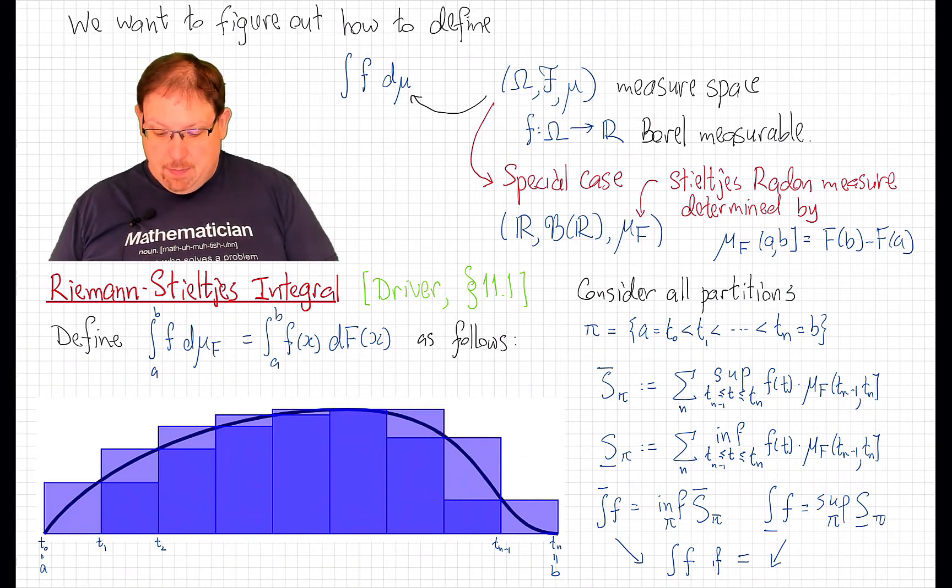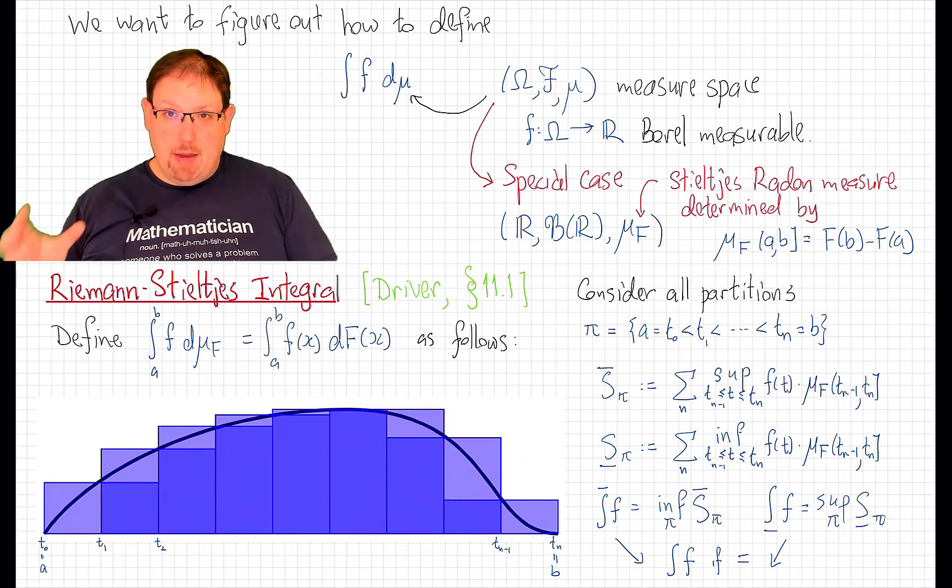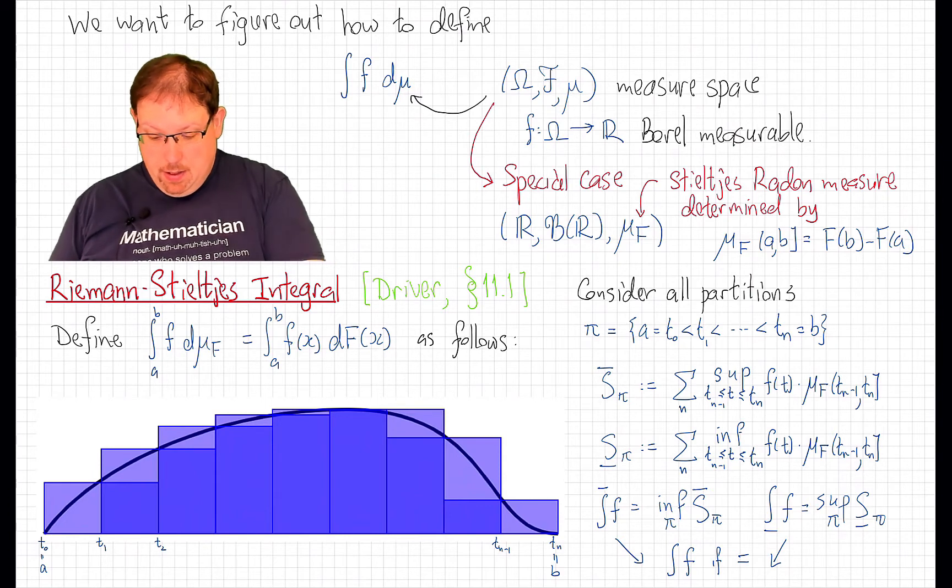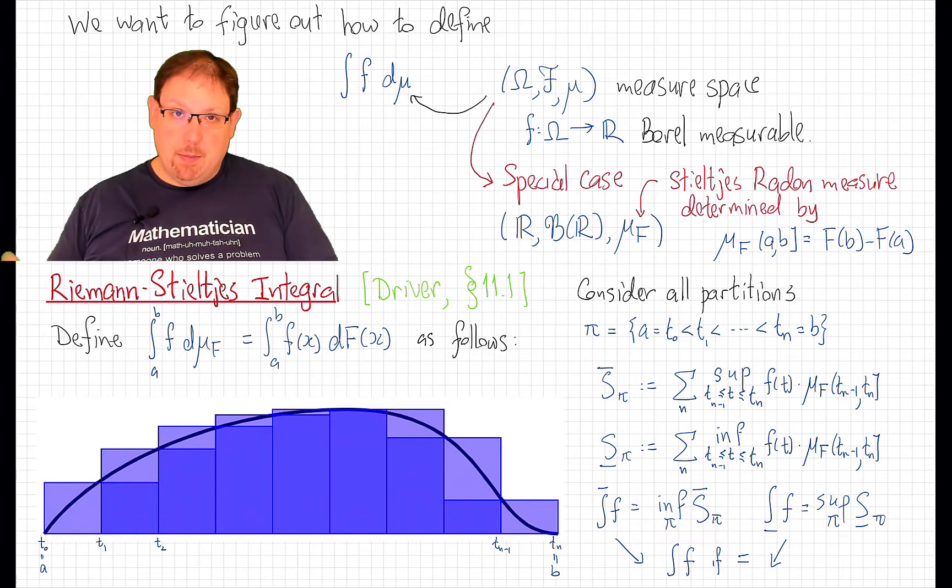And that means that as I take the mesh smaller and smaller, the upper sum gets smaller and smaller. And so, its infimum is approaching the area under the curve.